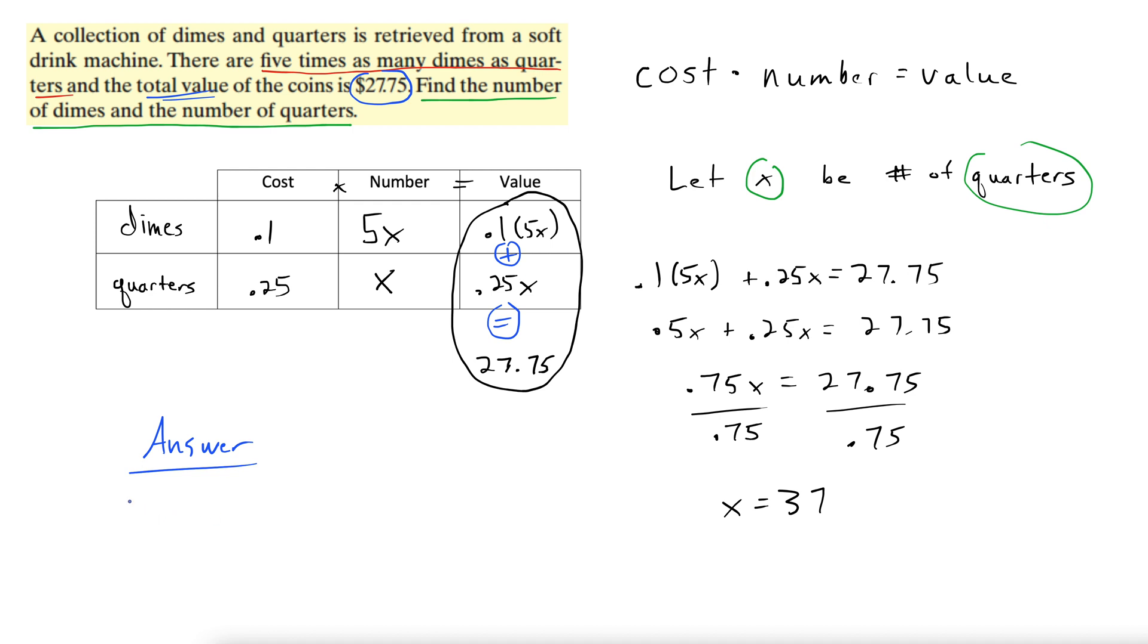Okay. So here's the answer. We'll say 37 quarters. How many dimes? Well, 5 times that amount gives us the dimes. So 5 times 37. Again, you might need a calculator for this one. It comes to 185. So 185 dimes.